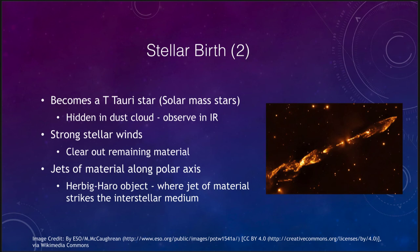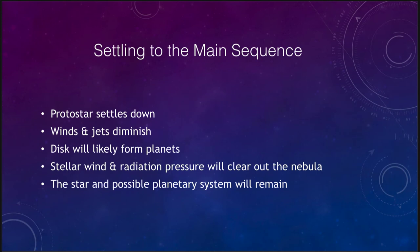As the nebula is cleared out and the T Tauri phase ends, the star begins to settle into the main sequence. The protostar calms down, the stellar winds and jets diminish, and the disk of material will likely form planets — planets are very common. The stellar winds and radiation pressure slowly clear out the remaining gas and dust, leaving behind the star and most likely a planetary system.